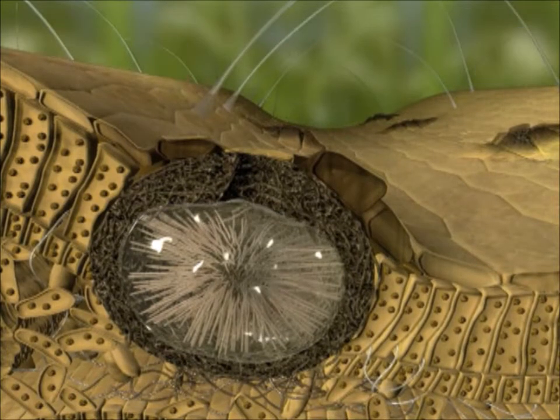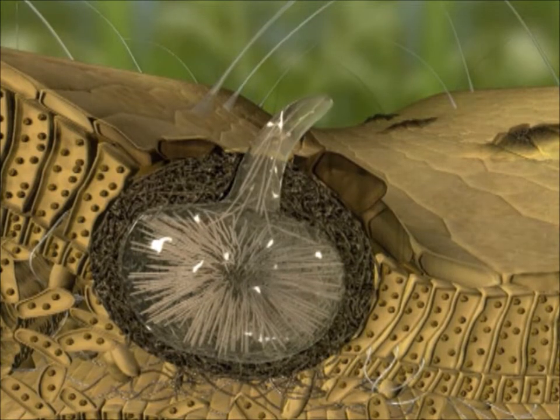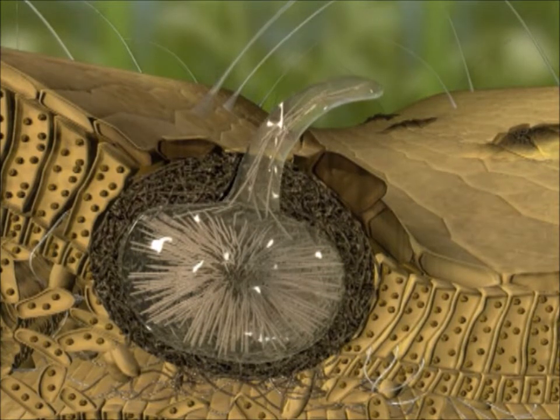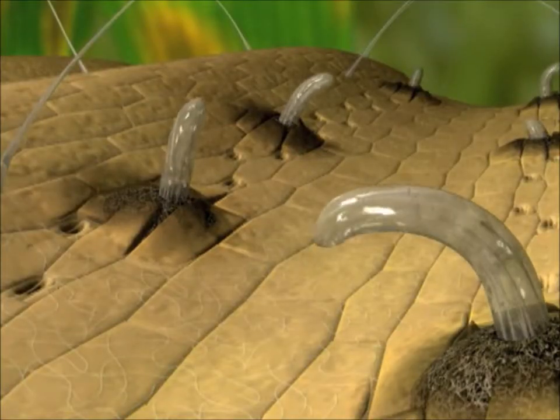During dry weather, the surrounding tissue shrinks faster than the pycnidia. This mechanism causes the pycnospores, in the form of mucilaginous tendrils, to be pressed out of the opening in the pycnidium, the osteolum.